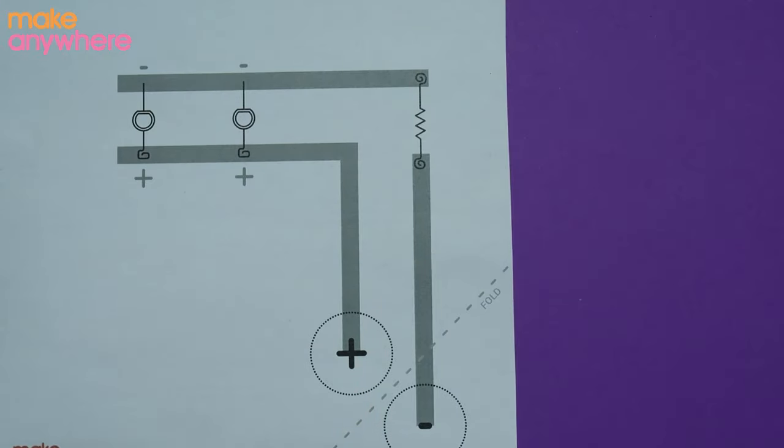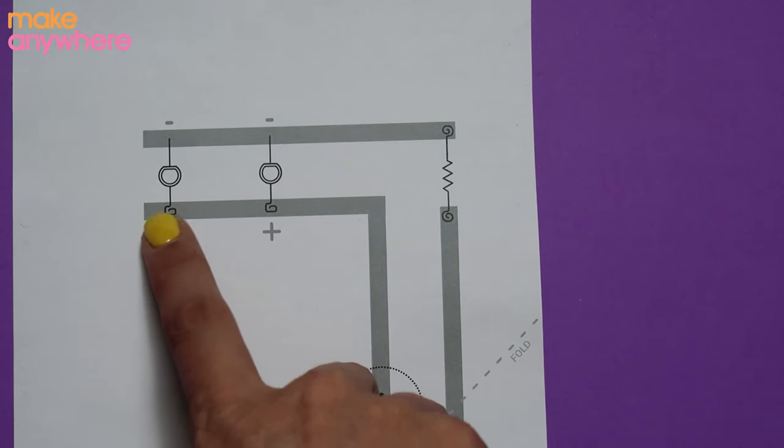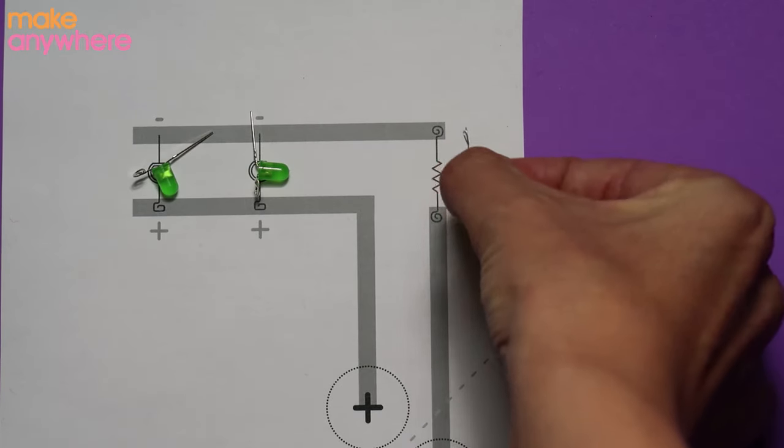So we'll lay out where your components go. Your LEDs will go here with the positive or circle legs touching on this side and your resistor is going to go here.